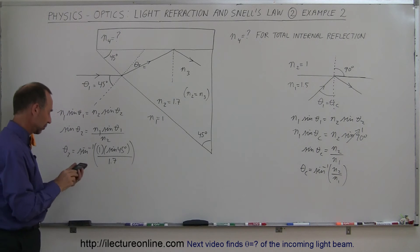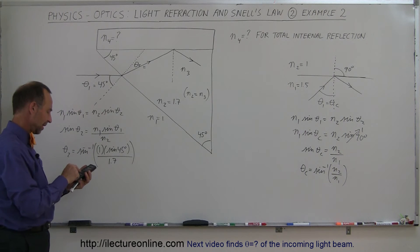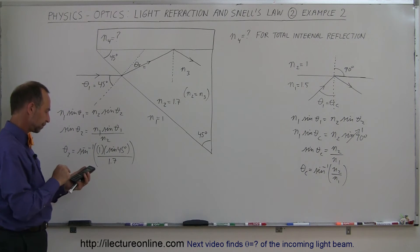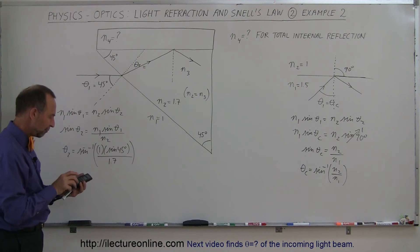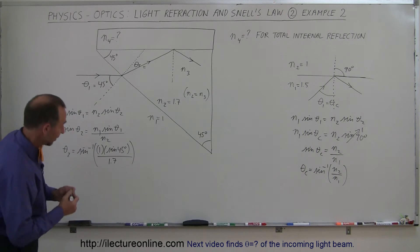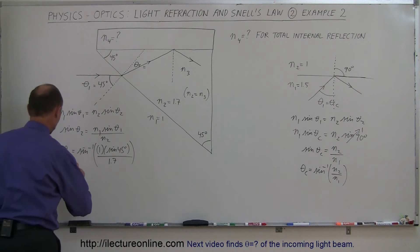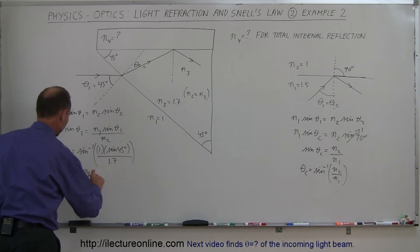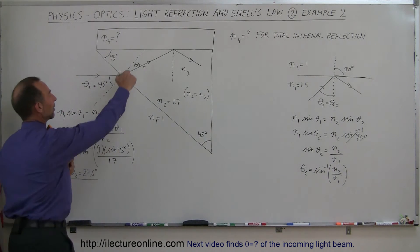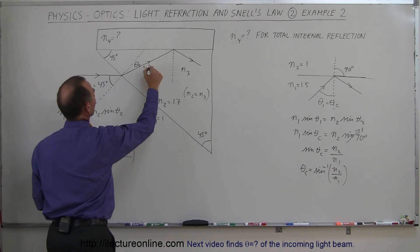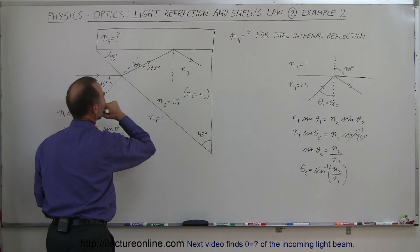Taking the sine of 45 degrees, dividing by 1.7, and taking the arc sine gives us 24.6 degrees. So theta sub 2 equals 24.6 degrees, which is the refracted angle across the first boundary.